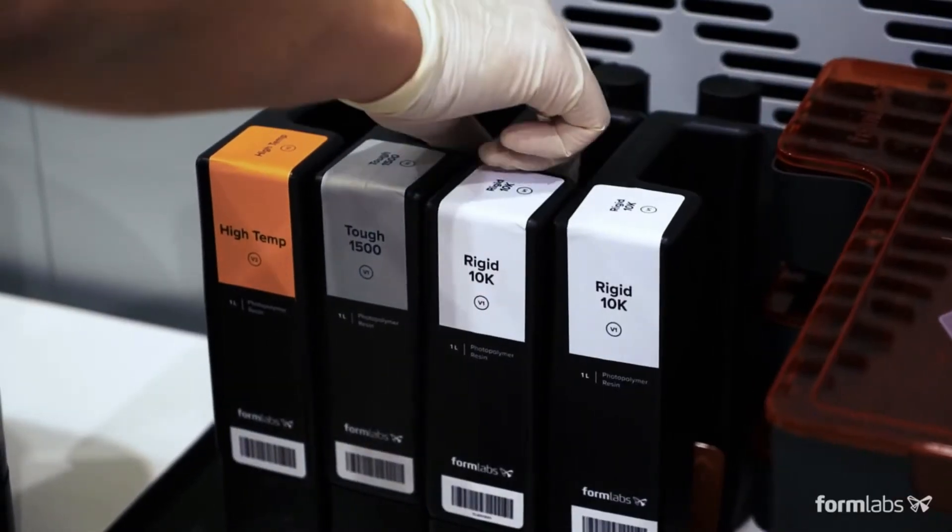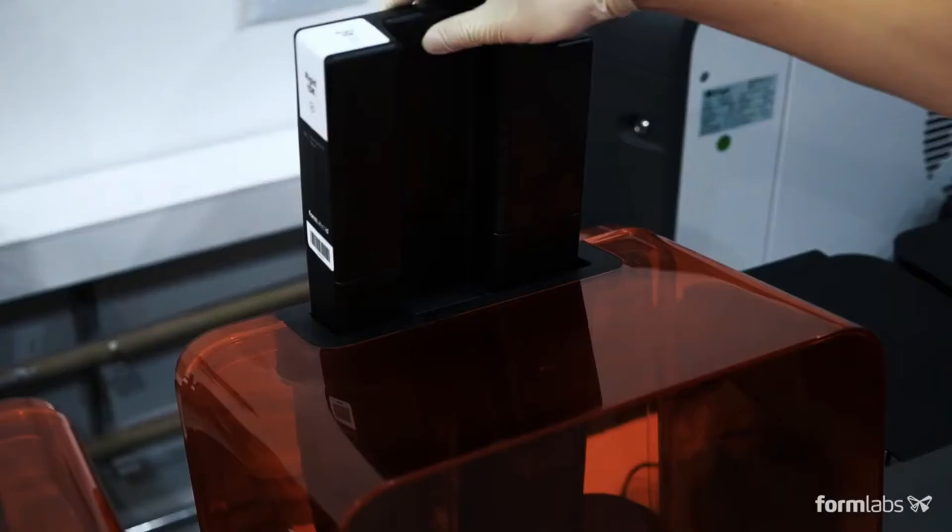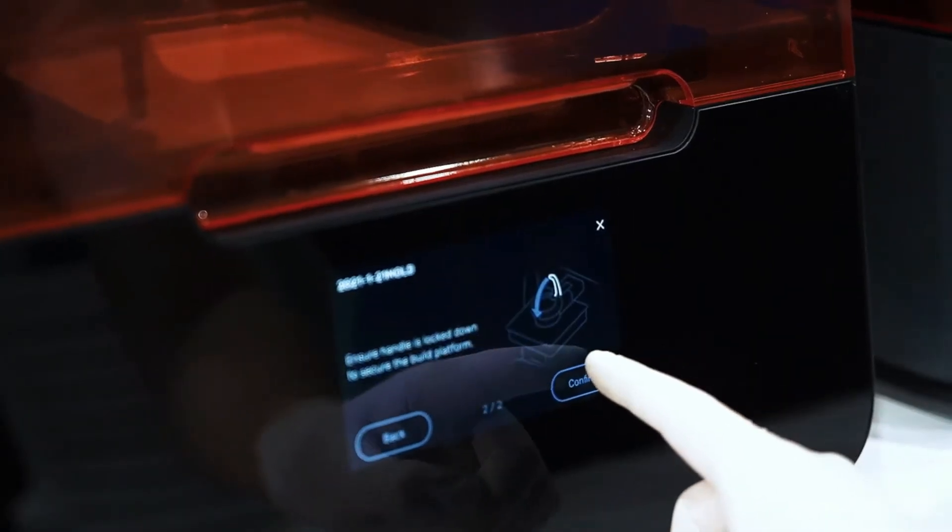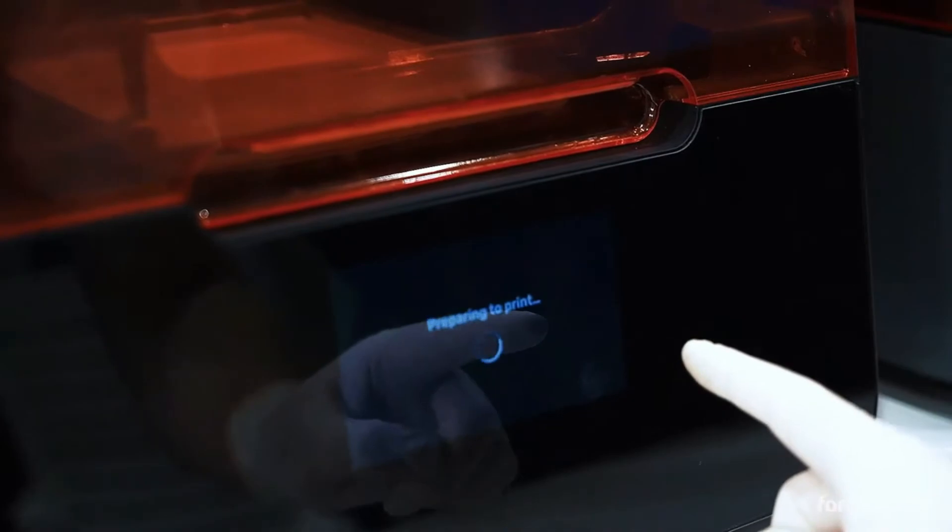Choose a material and begin the print. Rigid 10K resin combines high strength, stiffness, and thermal resistance, making it an ideal material for injection molds.